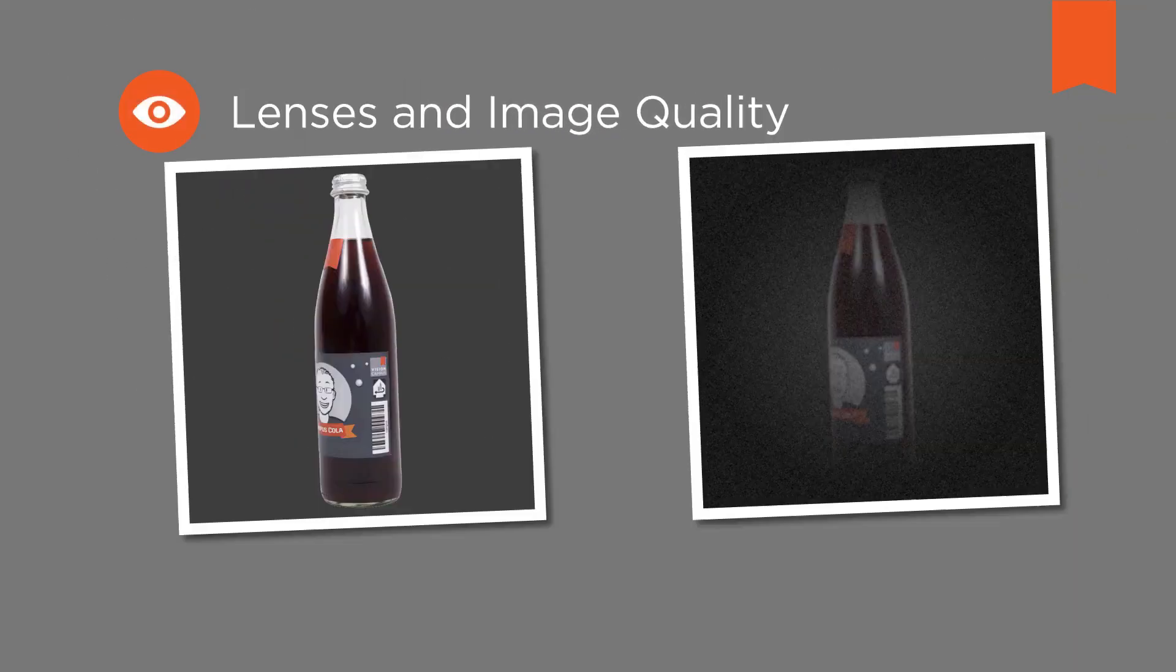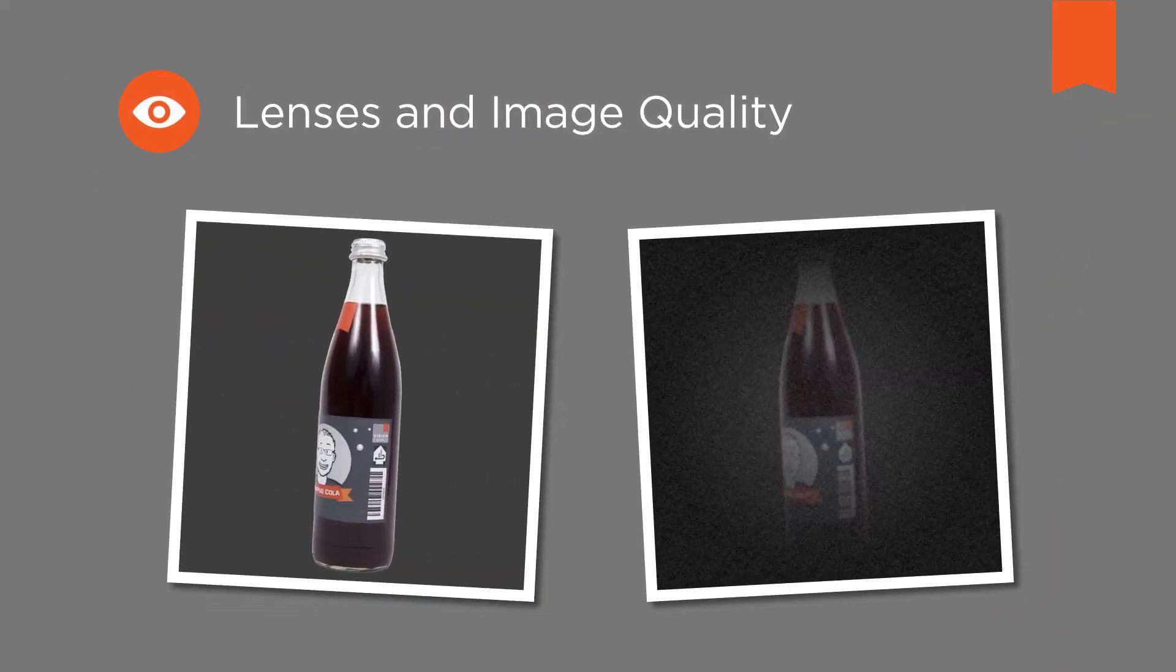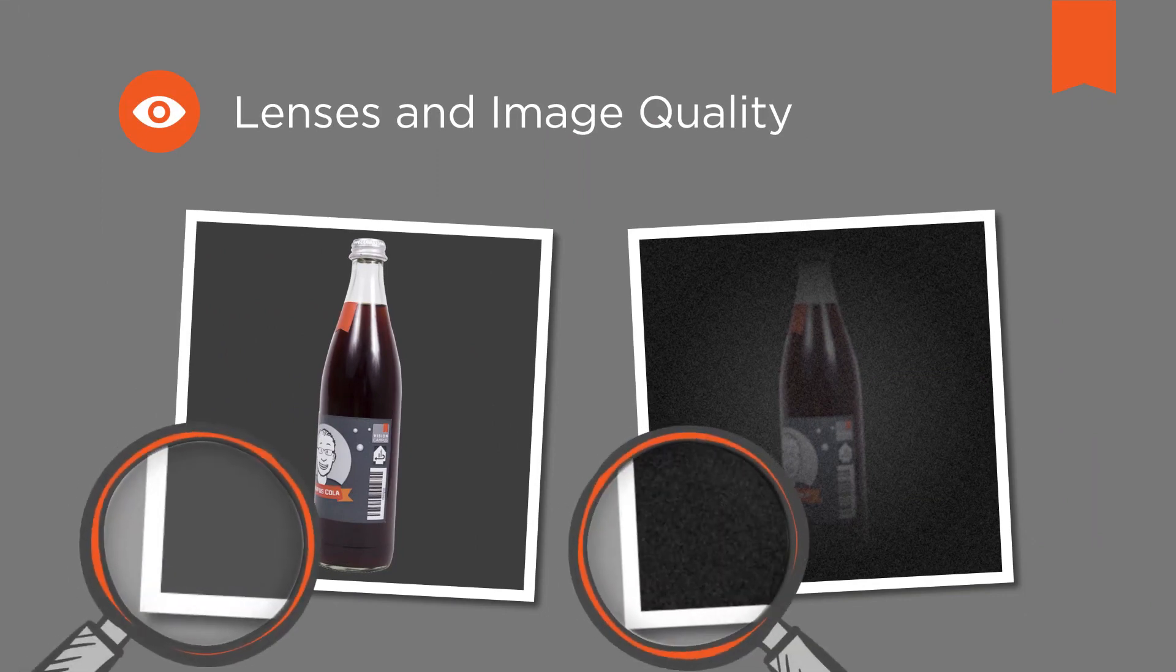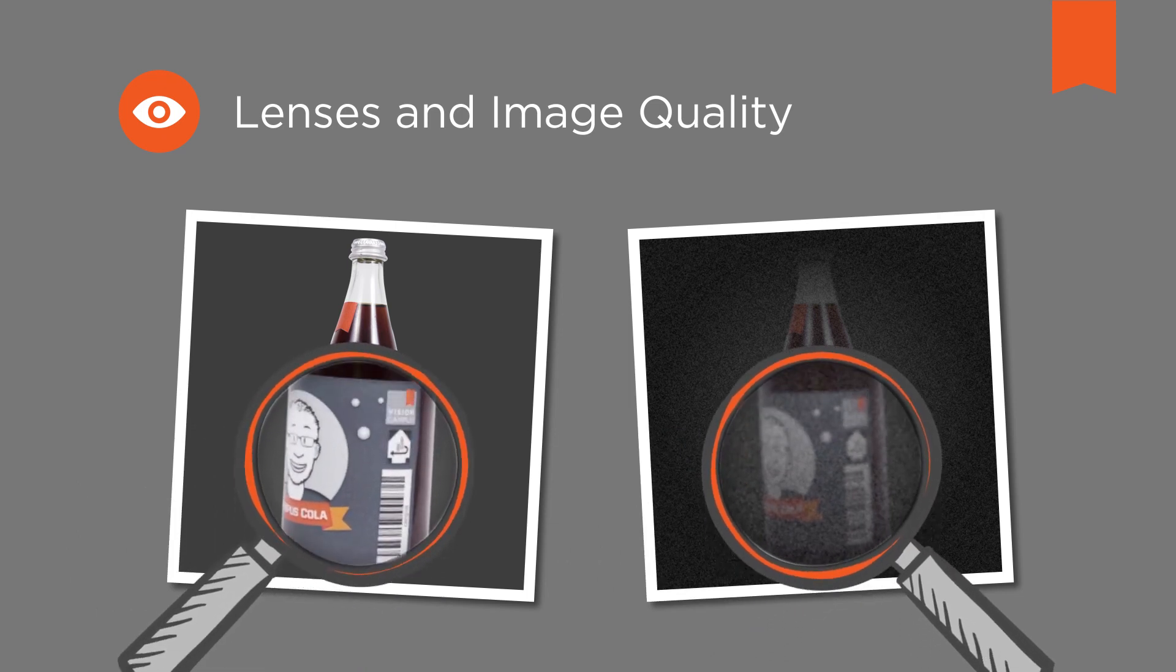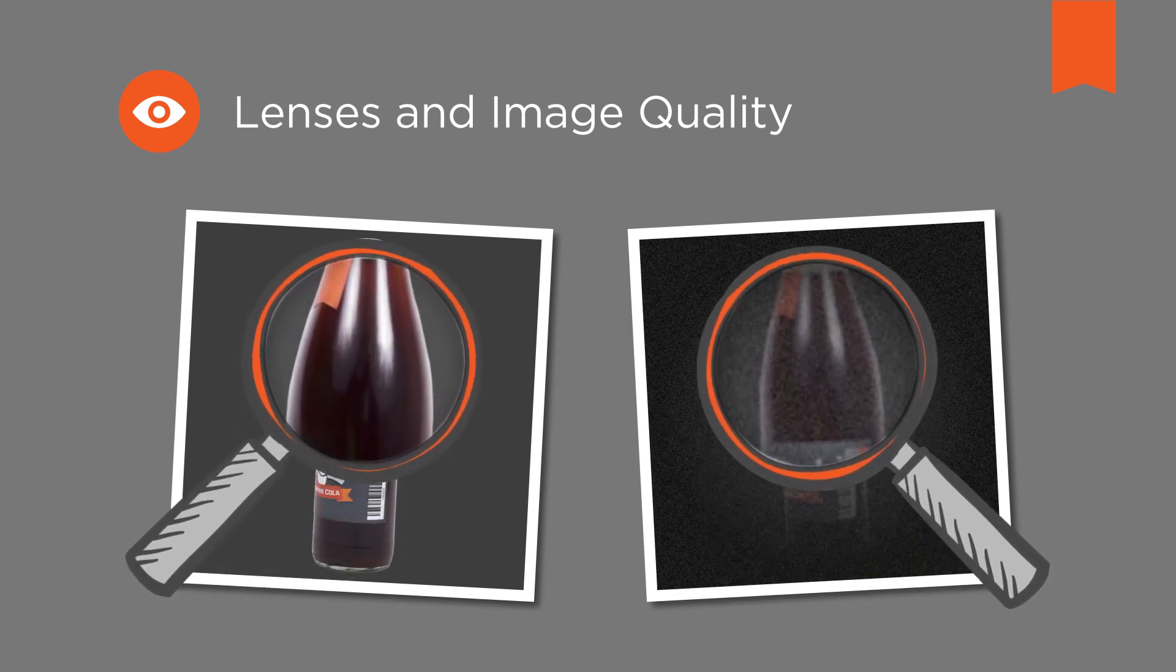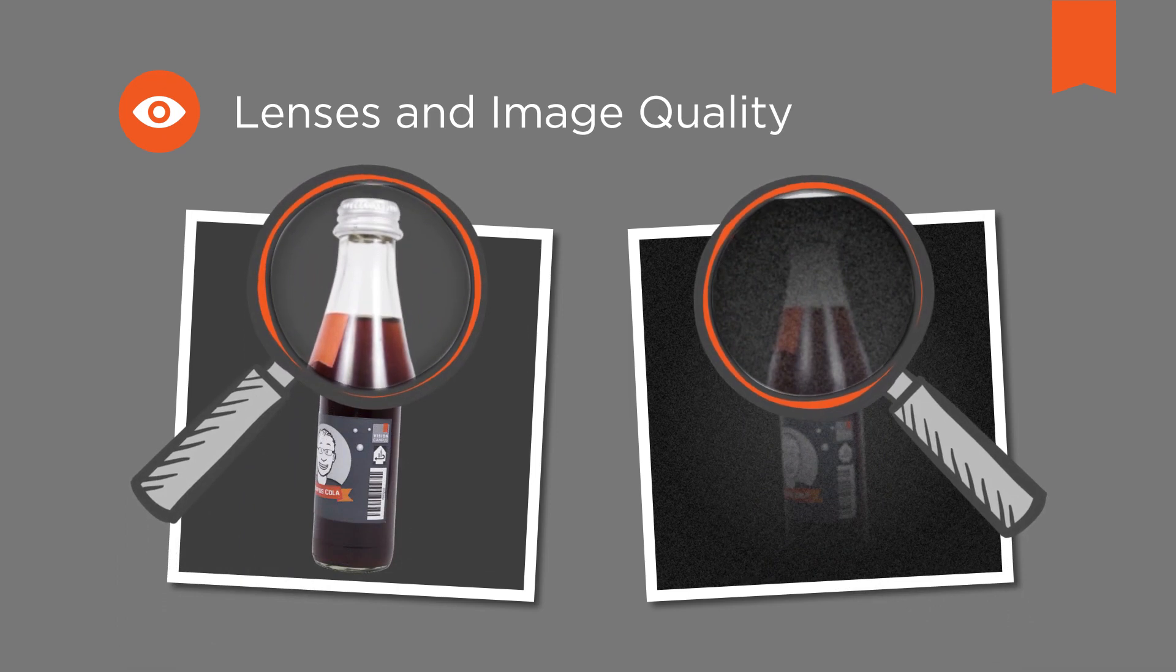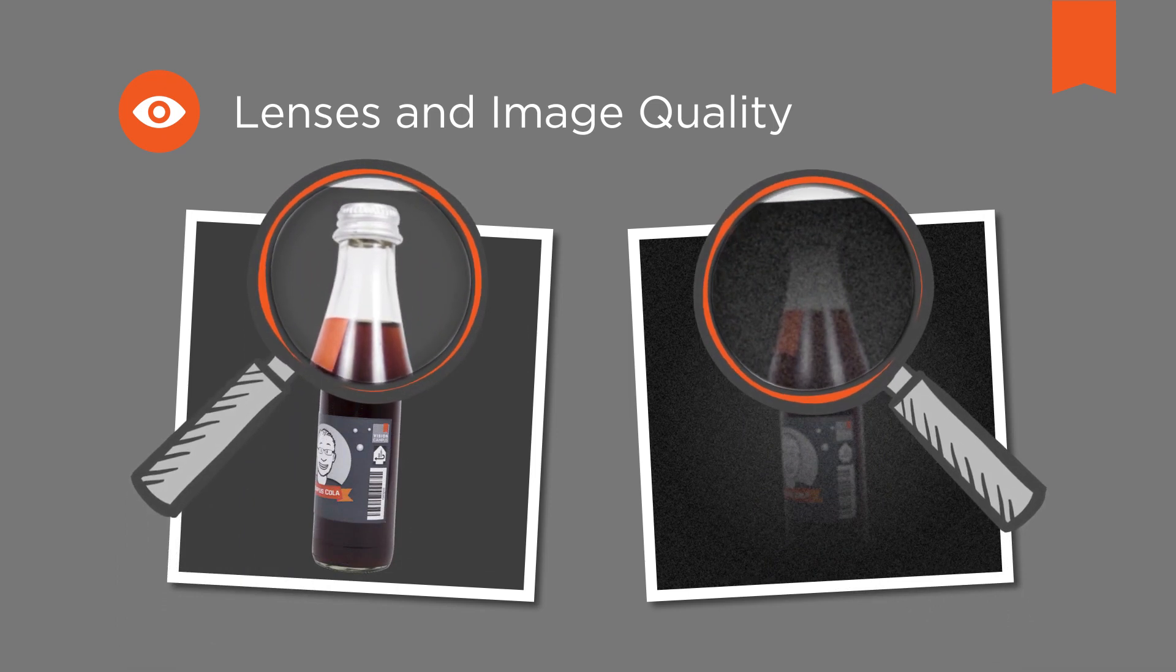Welcome to the Vision Campus. In a vision system, lenses play a key role in image quality. A good primary image is the precondition for high quality and stable image evaluation. Because software can't reliably evaluate an image that is not captured correctly.